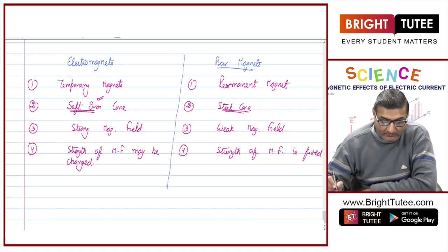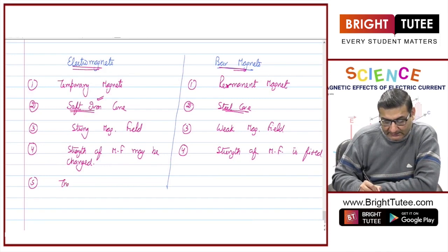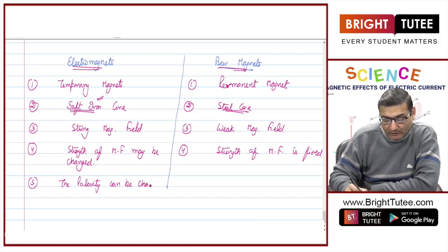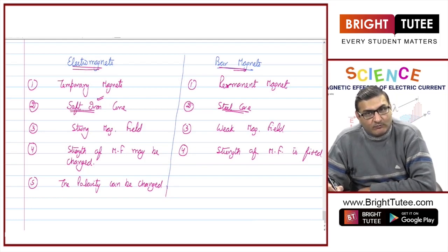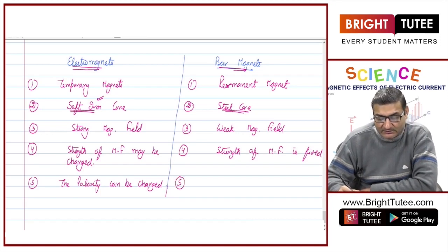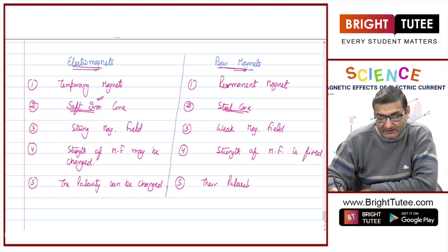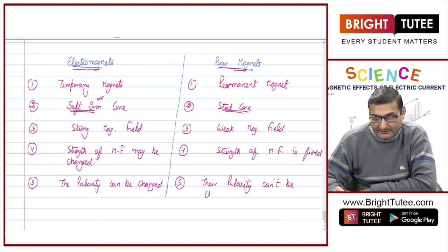There is one more difference between electromagnets and bar magnets. In electromagnets, the polarity can be changed — polarity meaning the north pole and the south pole — because these poles depend on the direction of current. By changing the direction of current, we can change the north and south poles of the electromagnet. But this is not the case with bar magnets; their polarity cannot be changed.